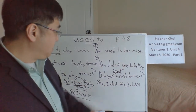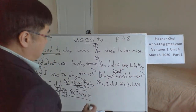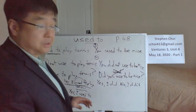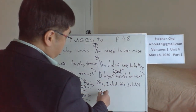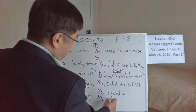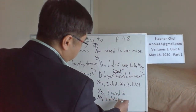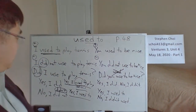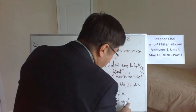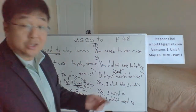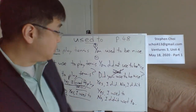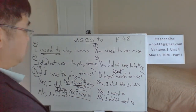'Did you use to be nice?' — 'Yes, I did' or 'No, I did not.' For a long answer: 'Yes, I used to be nice' or 'No, I didn't use to be nice.' Or informally: 'Yes, I used to' or 'No, I didn't used to.' That's how people would reply to a 'used to' question.